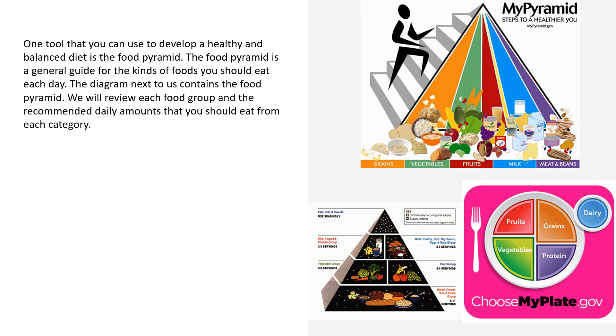The food pyramid includes meats and beans, milk, fruits, vegetables, grains, and also oils.